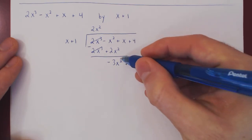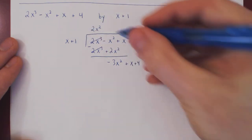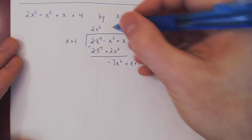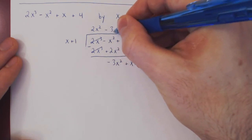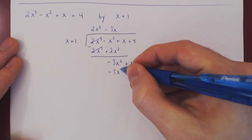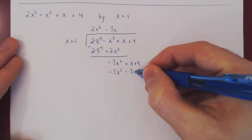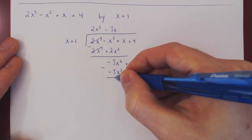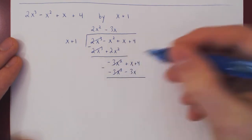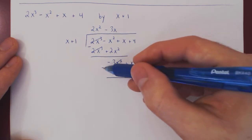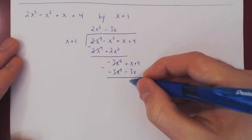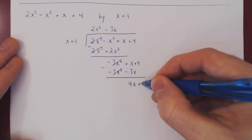The degree here is 2 and the degree of the divisor is 1, so we repeat. What times x is negative 3x squared? Negative 3x. We multiply out: negative 3x squared minus 3x. We subtract — these two cancel. x minus negative 3x gives us plus 3x, so 4x plus 4.